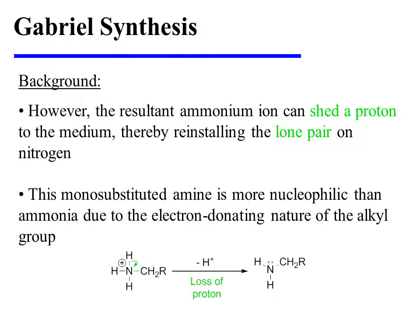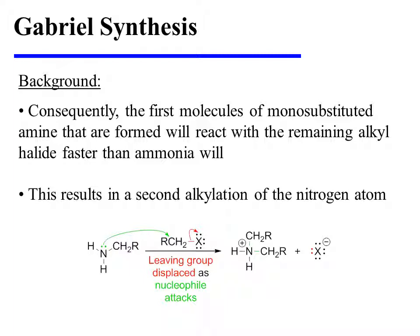This monosubstituted amine is more nucleophilic than ammonia due to the electron-donating nature of its alkyl group. Consequently, the first molecules of monosubstituted amine that are formed will react with the remaining alkyl halide faster than ammonia will. This results in a second alkylation of the nitrogen atom.